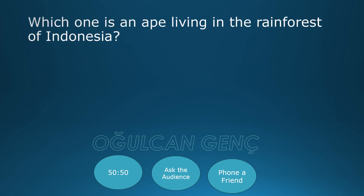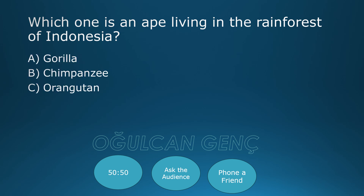Which one is an ape living in the rainforest of Indonesia? Gorilla, Chimpanzee, Orangutan, Mandrill. Correct answer: Orangutan, C.